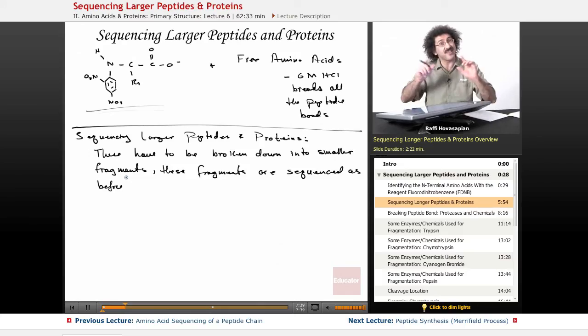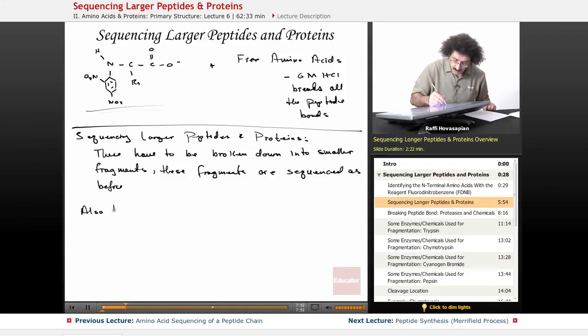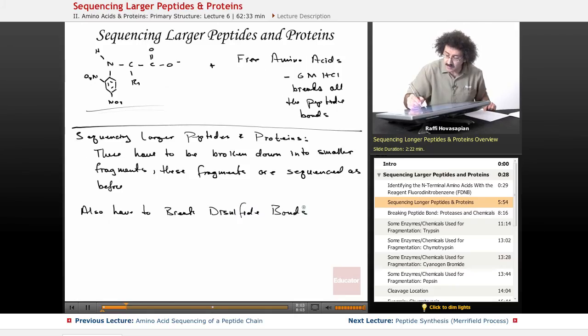Not only do you have to break the protein or peptide into smaller fragments, but you remember these disulfide bonds, the disulfide bridges that exist between the cysteine residues - they're actually covalent. We have to break those because they interfere with the sequence processing. We also have to break the disulfide bonds in a protein, and that's usually the first thing you do. You break the disulfide bonds, then you start chopping up the protein.